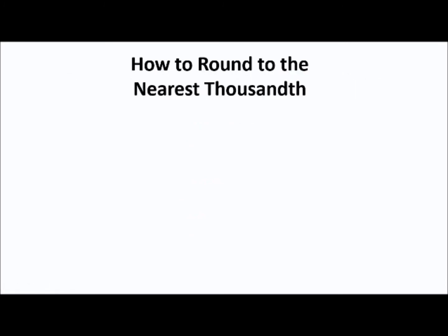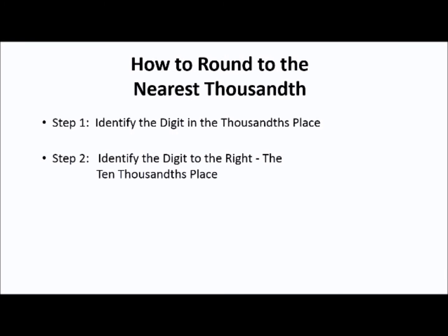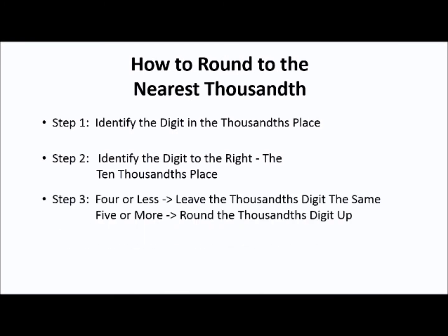Now, I will show you how to round to the nearest thousand. Step 1, identify the digit in the thousandths place. Step 2, identify the digit to the right, the ten thousandths place. Step 3, 4 or less, leave the thousandths digit the same. 5 or more, round the thousandths digit up. Step 4, eliminate the digits to the right of the thousandths place.